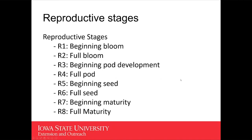The reproductive stages in soybean are different as well. We're looking at different plant parts than corn. Remember in corn we had six stages; in soybean we have eight reproductive stages. The easy way to look at this is that they are always paired up: R1 and R2 are beginning and full bloom; R3 and R4 are pod development beginning and full; R5 and R6 is seed fill beginning and full; and R7 and R8 is beginning and full maturity stage.